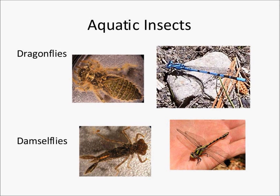We'll go over a quick visual review of aquatic insects before going into site ID for each order in depth. Here we see common dragonflies and damselflies — a larval dragonfly, an adult dragonfly, a larval damselfly, and an adult damselfly. An easy way to tell the difference between adults is that adult dragonflies always hold their wings out to the side, while almost all damselflies hold their wings folded up over the body.